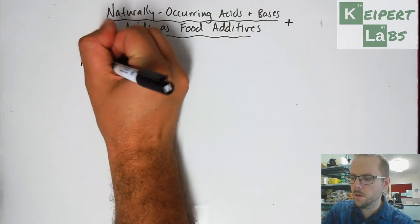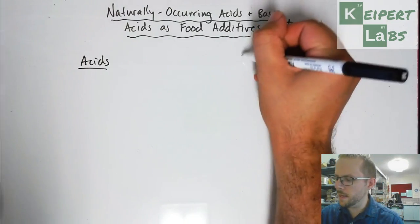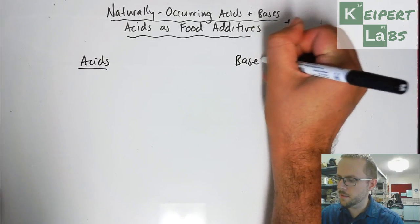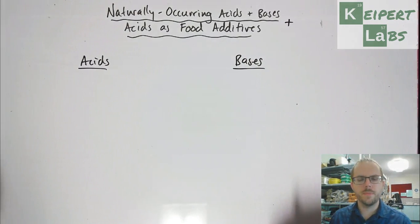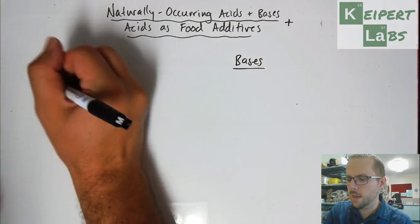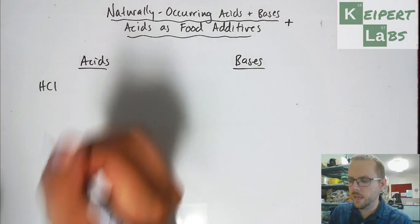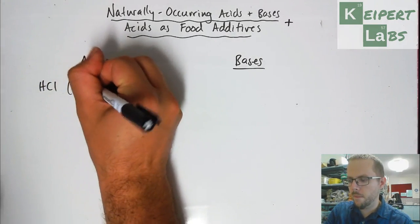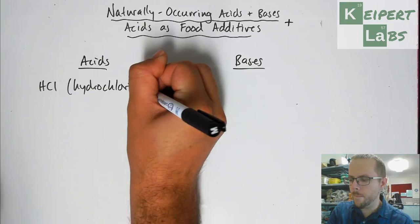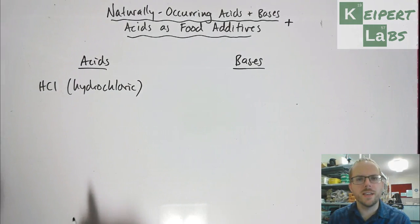So we're going to have a quick look at some acids and some bases that occur naturally. So that is, we find them in nature as opposed to man-made or synthetic. So we've got hydrochloric acid, HCl. So it occurs inside our stomach and it's used for digestion.